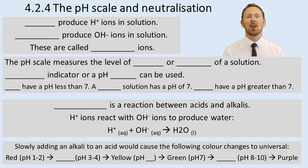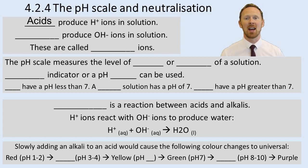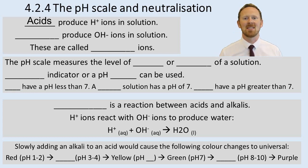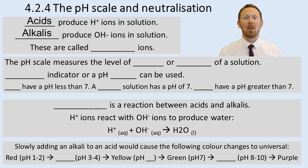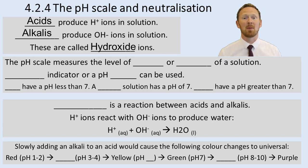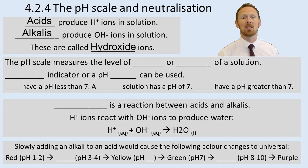Acids produce H plus ions in solution — H plus (aq) represents an acid. Alkalis produce OH minus ions in solution, called hydroxide ions. For example, Ca(OH)2 is calcium hydroxide, and OH minus ions are called hydroxide ions.